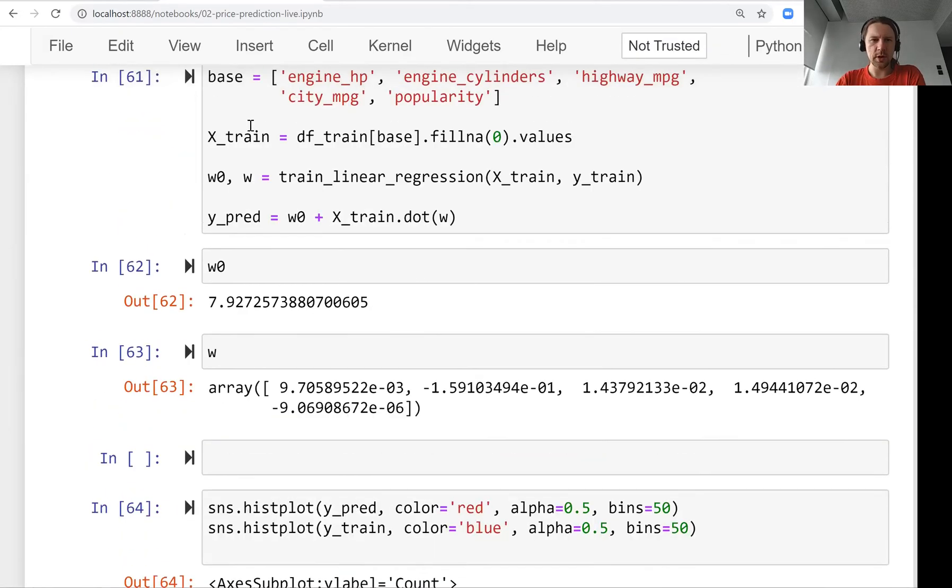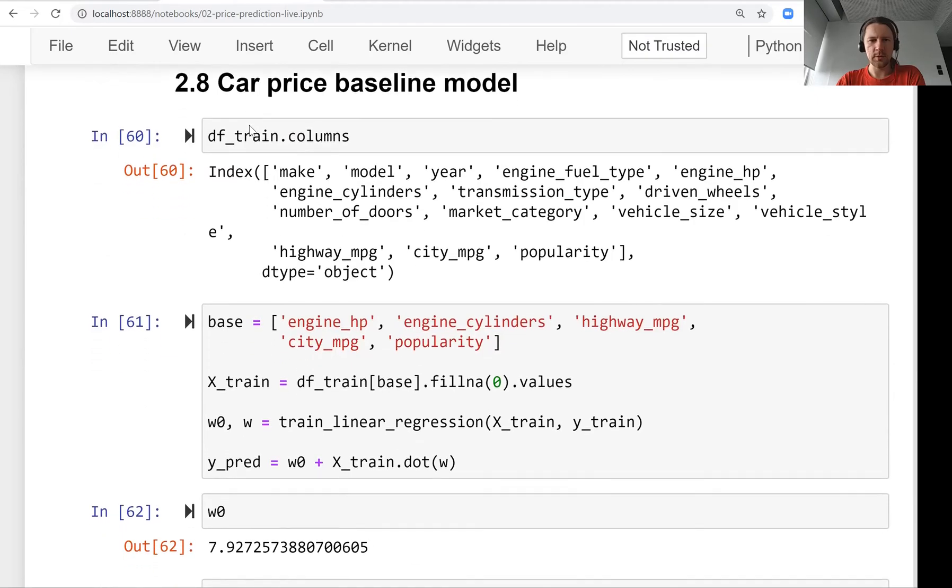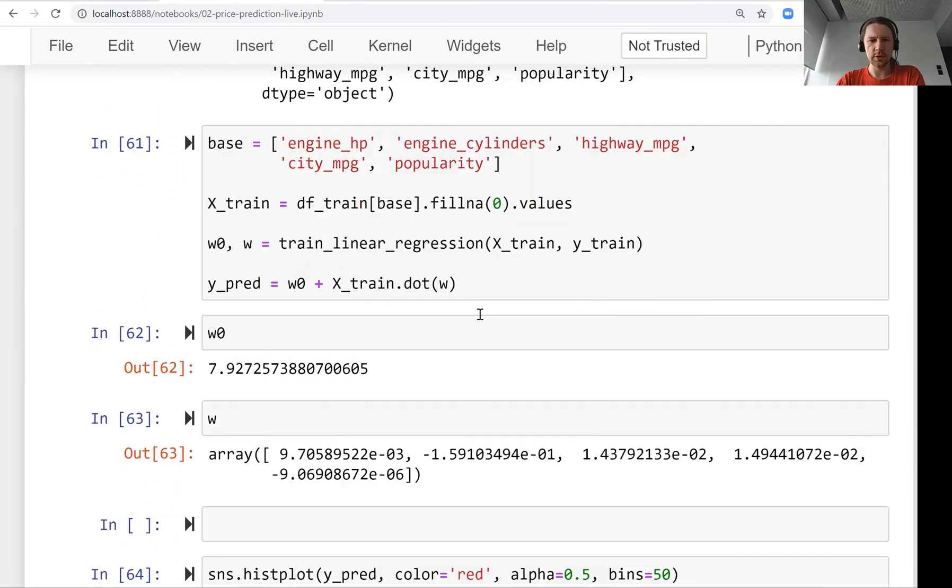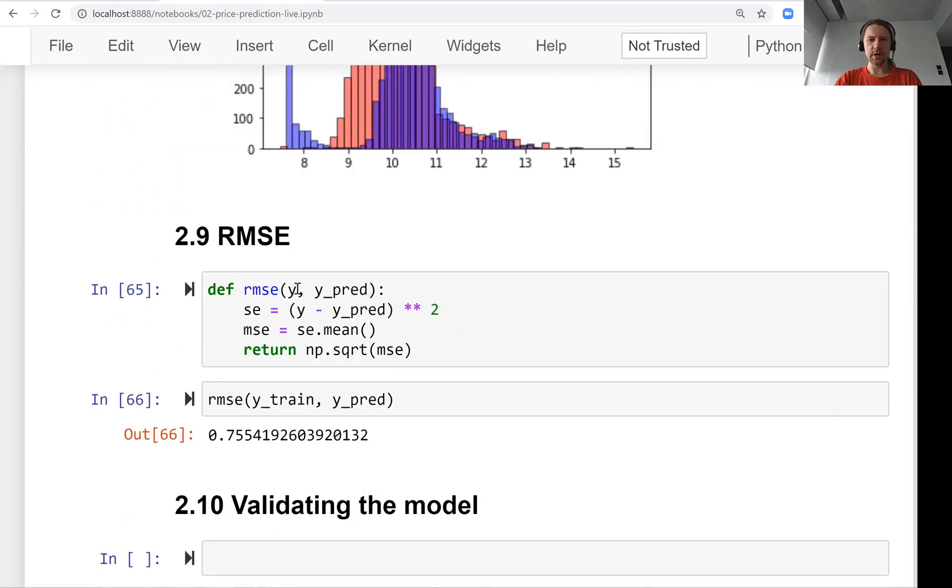Two lessons ago we built our first baseline model using five numerical features and wrote a function for objectively measuring the quality of our model. This was RMSE, the root mean squared error. But the way we did it...